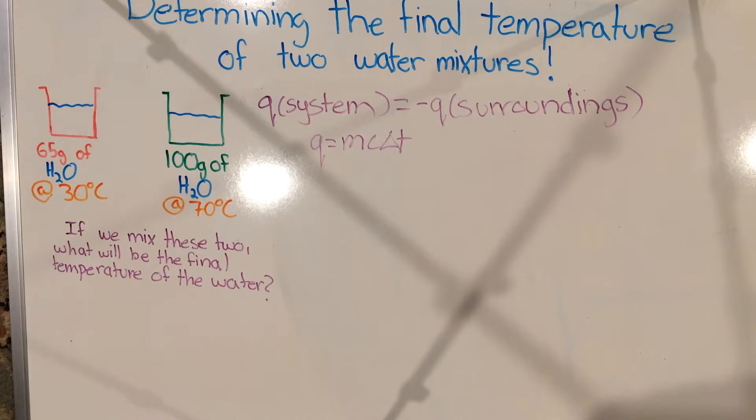In order to really see how this works, it is best to work through a practice problem. Let's say that we have two separate jugs of water, each with the exact same kind of water from the exact same source. In other words, we assume everything is controlled.